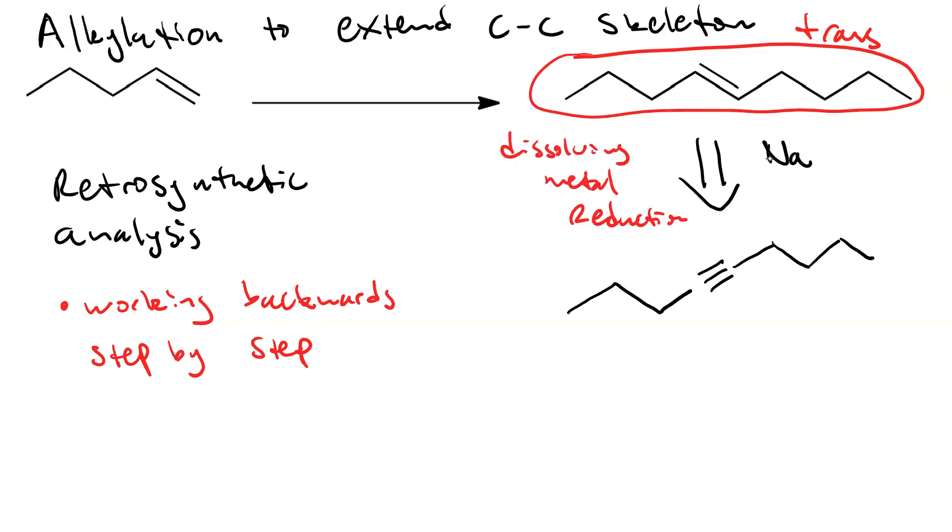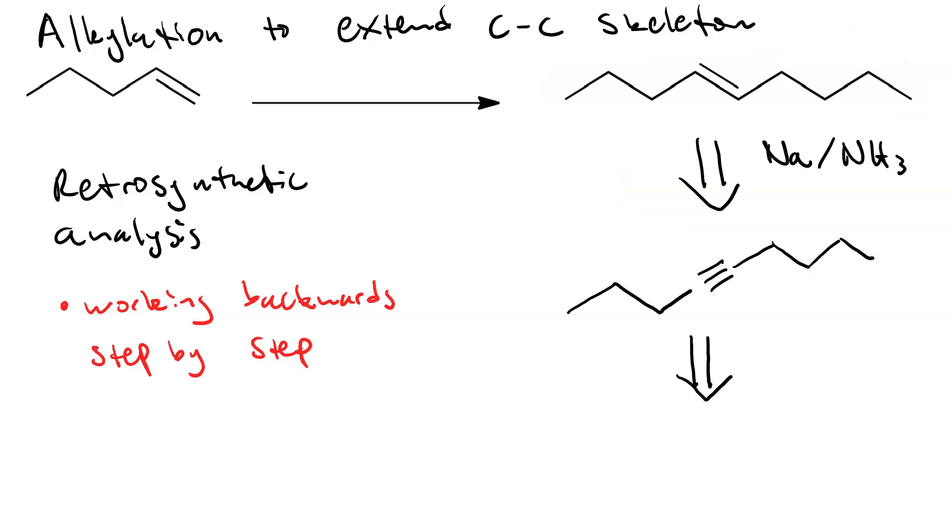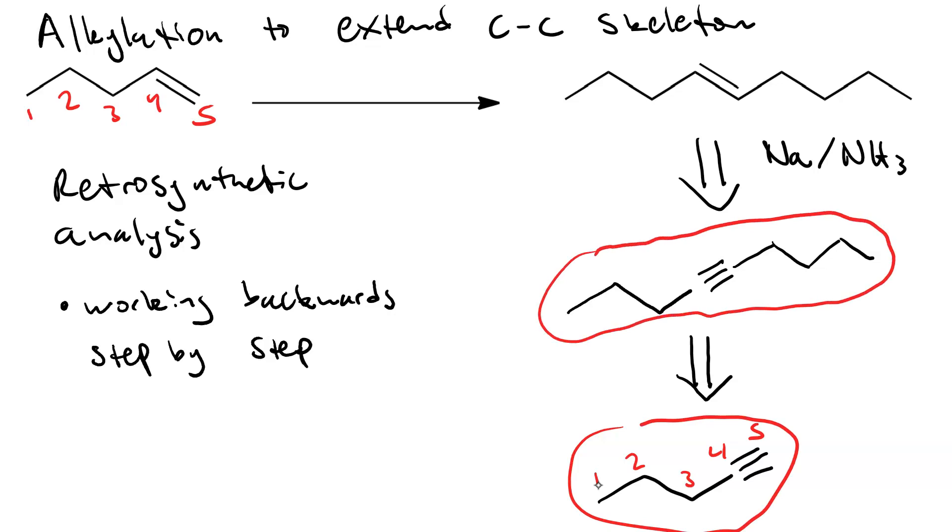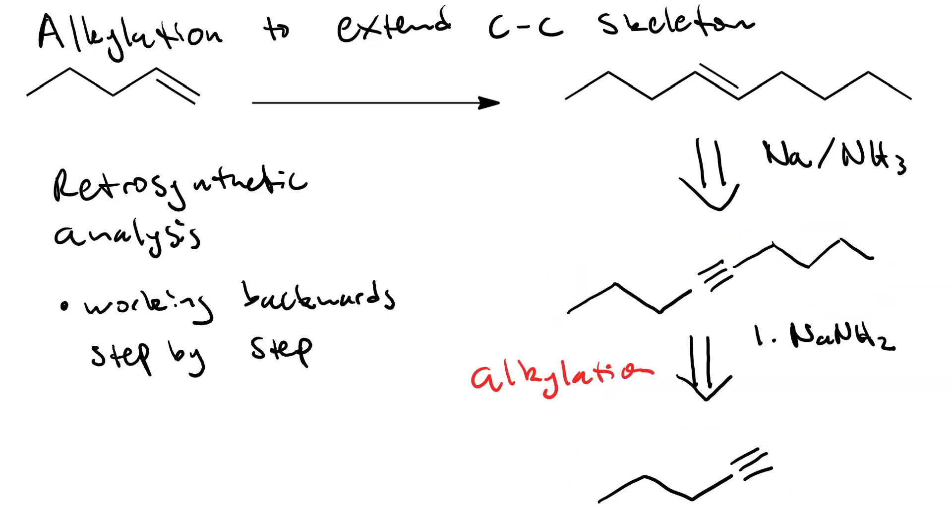What is the precursor to our nine-carbon alkyne? In other words, what goes here? Well, the clue is that we're starting with a five-carbon alkene, so we need to put a five-carbon alkyne there. To go from a terminal alkyne to an internal alkyne with an extended carbon skeleton, we need to do alkylation.